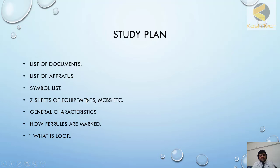I have explained how you can find the list of documents and how you can read the list of operators. This is also very important if you are doing maintenance because all the ordering codes are mentioned in it. Then there is a symbol list. In the Z sheet I have shown how you can track different equipment and check the full detail of each item. I have explained general characteristics — this is also very interesting — and what information you can find there, including how ferrules are marked.